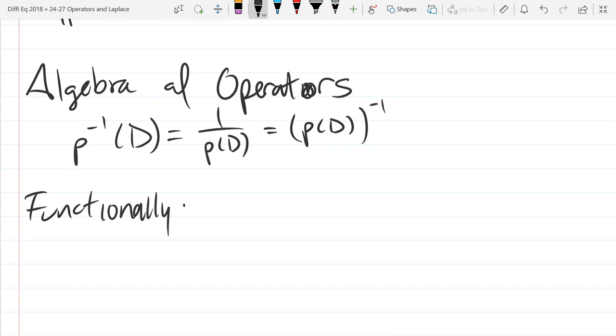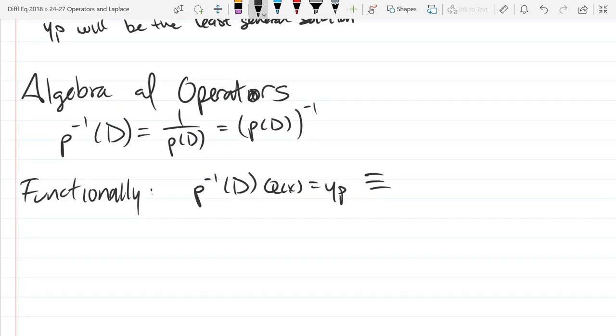Functionally, how do these look? So how do they function? P^(-1)(D) operating on some function Q(x) will equal yp. That's the same as I'm going to move the operator to the other side as the inverse. So what's going on? We have this P^(-1)(D). We move it to the other side as the inverse operator. This is the way inverse functions work right here. You just bring it to the other side of the equation as the opposite or the inverse. So any questions on that functional notation right there?